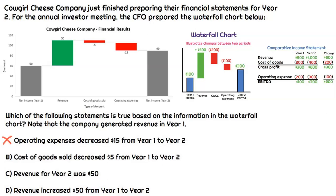On the next one, it says cost of goods sold decreased $5 from year one to year two. This is very similar to the one we just discussed. It's also showing negative five in the chart. However, because cost of goods sold decreases net income — it's an expense — when we're bridging net income, that means cost of goods sold actually increased $5 from year one to year two. So that's going to be incorrect.